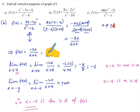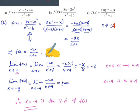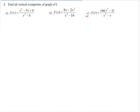This is how we determine the vertical asymptote for any rational function. In part c, we have the function f(x) = sine of (x squared minus 1) over (x cubed minus x).